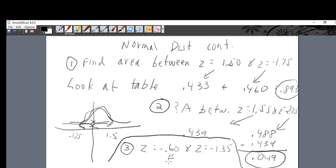So look up the 0.60 on your table. And when you look it up, you should get 0.226. When you look up the 1.35 on your table, you should get 0.412. You subtract the smaller from the larger, the 0.226 from the 0.412, and what you get is 0.186. And you are done. That's the answer.